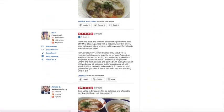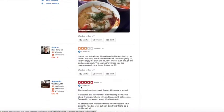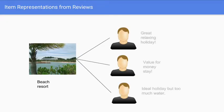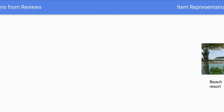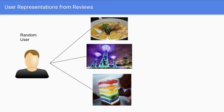As such, reviews are often exploited in recommender systems. A common paradigm in many review-based recommender systems is to learn representations of users and items based on reviews. For example, an item is represented by all the reviews written for it. Similarly, a user is represented by all reviews he or she has written. This enables rich modeling of user preferences or item attributes which can be found in the content of the reviews.